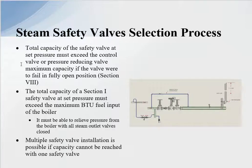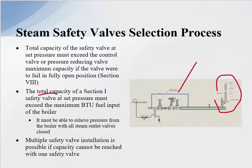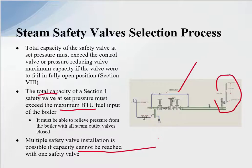The total capacity of the safety valve at set pressure must exceed the maximum capacity of the control valve or pressure reducing valve if it were to fail in the fully open position. So if that valve fails fully open, the safety valve must be able to discharge the total capacity. For boilers, that means the safety valve must relieve the maximum steam output corresponding to the maximum BTU fuel input for that boiler, depending on fuel type. Multiple safety valve installation is possible if the required capacity cannot be met with one valve — it is common to find two or three safety valves on boilers.